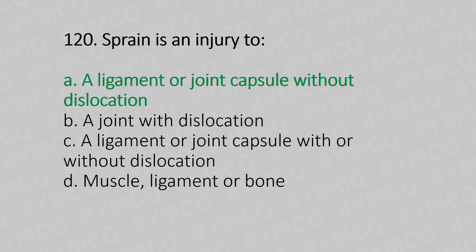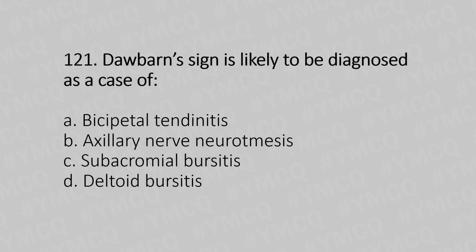Question number 121: Dawbarn's sign is likely to be diagnosed as a case of — Option A: bicipital tendinitis, Option B: axillary nerve neuritis, Option C: subacromial bursitis, Option D: deltoid bursitis. The answer is Option C, subacromial bursitis.